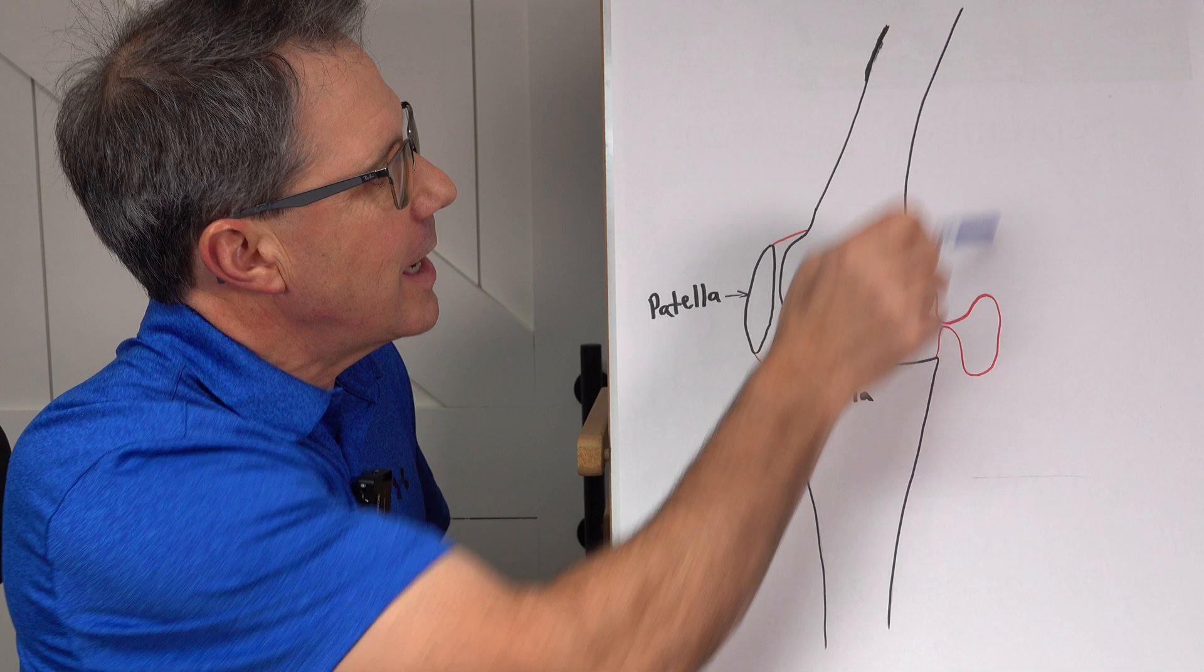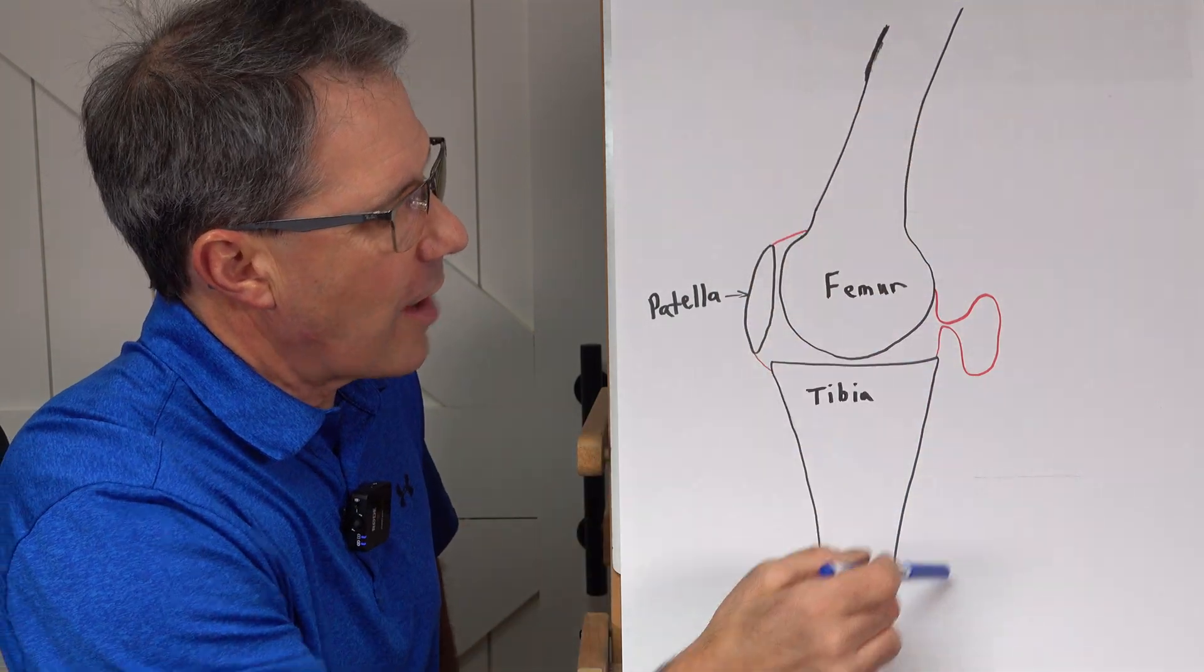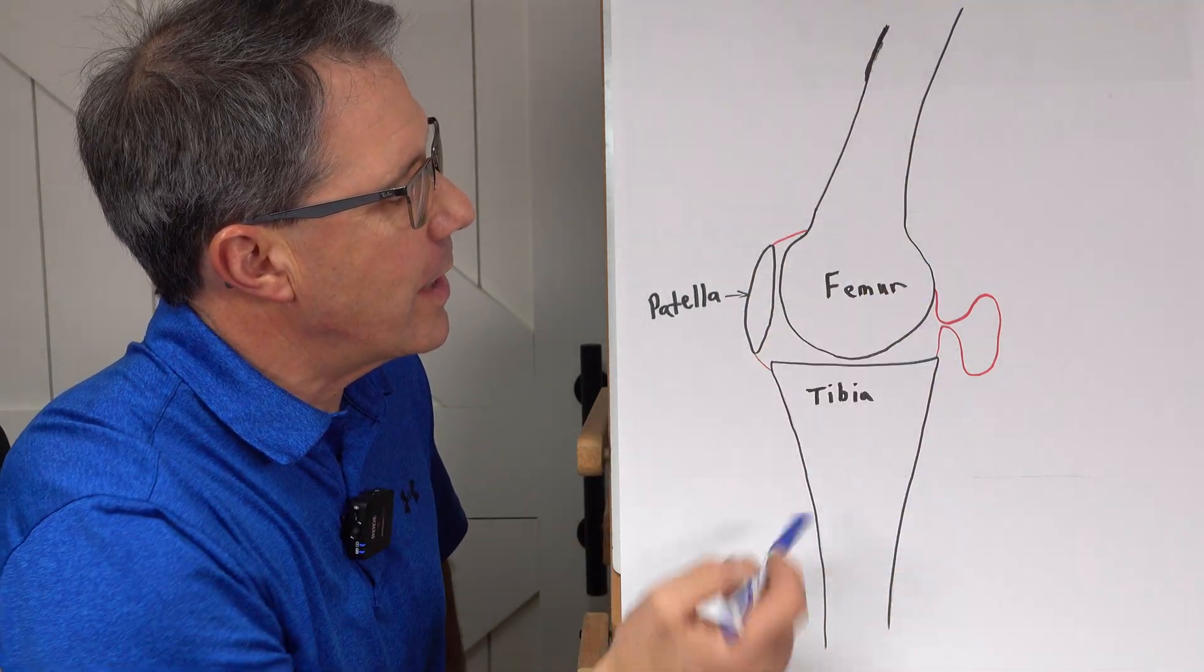Your hamstring muscles reside here. They come down. Your calf muscles come here. They kind of crisscross in and around this area.